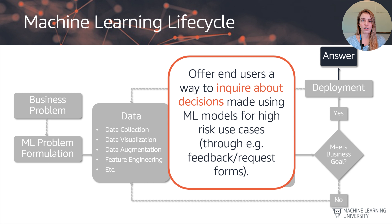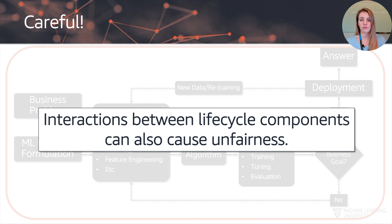Finally, when creating predictions or answers surfaced to the end user, there should be a way of inquiring about the decision that was made. Thinking back to a credit line increase example — if you just provide a 'denied' or 'approved' outcome, the customer won't know why. This introduces a concept we need to discuss: explanations for models, or using intrinsically explainable models, which is particularly relevant for high-risk use cases. We also need to be careful that interactions between different lifecycle components can cause unfairness — just because you mitigated bias earlier doesn't mean it's completely gone, so keep evaluating at every stage.